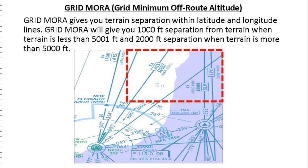Grid Minimum Off-Route Altitude gives you terrain separation within latitude and longitude lines. Grid Minimum Off-Route Altitude will give you 1,000 feet separation from terrain when terrain is less than 5,001 feet, and 2,000 feet separation when terrain is more than 5,000 feet.